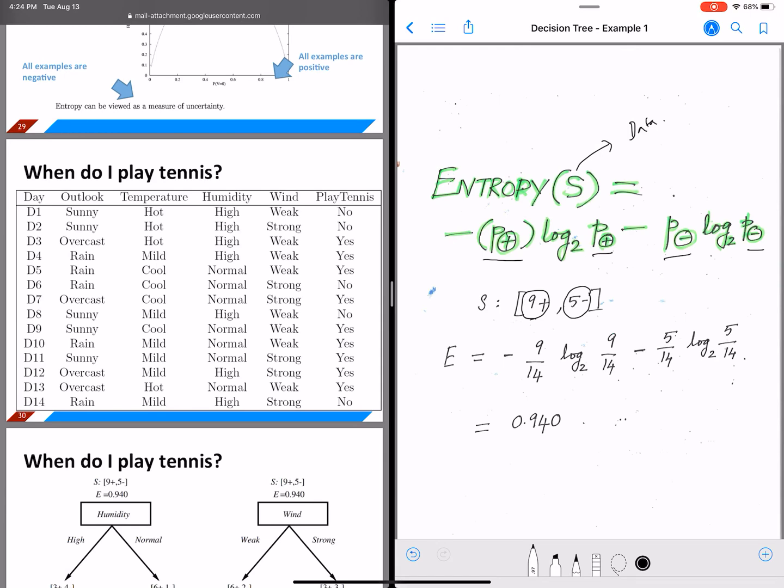So the entropy calculation becomes 9 out of 14. 14 is your entire data instances. So minus 9 over 14, log to the base 2, 9 over 14, minus 5 over 14, log to the base 2, 5 over 14. So this is going to be your entropy calculation for the data set on the left.